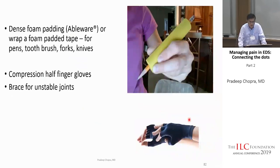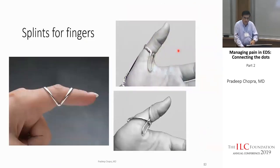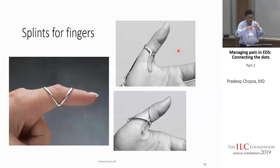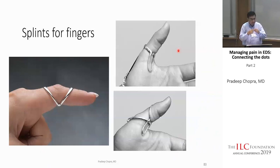The best compliance I get is with fingerless compression gloves — available as arthritis gloves on Amazon. For kids, there are dense foam tubes by Ableware that go around a pen, toothbrush, forks, and knives. Finger splints or ring splints stabilize lax finger joints — when you hold a pen, your fingers need to be stiff. If they're soft, it takes a lot of energy. Splints help stabilize them, making holding things easier.